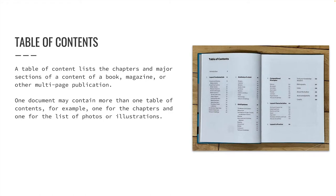One document may contain more than one table of contents — for example, one for the chapters and one for the list of photos or illustrations. The titles and page numbers are pulled directly from your document and can be updated at any time, even across multiple documents in a book file.